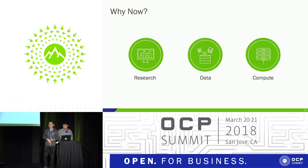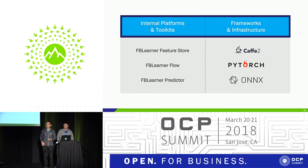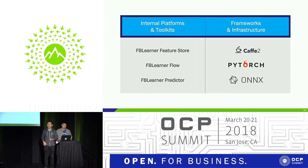To simplify the task of leveraging machine learning at Facebook, we designed our internal platform, which we call FB Learner. FB Learner is composed of three tools: FB Learner Feature Store, FB Learner Flow, and FB Learner Predictor. Each tool is responsible for one major component of the machine learning pipeline, and we'll see in the next slide how they interact with each other.